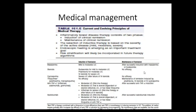5-ASA and mesalamine components work excellently for colonic inflammations like ulcerative colitis but have very minimal role in Crohn's disease. Mesalamine components are used for treatment of acute proctitis, acute left-sided colitis, and mild-to-moderate pancolitis, and are also effective for remission maintenance. Steroids are used when mesalamine is unable to control the disease adequately.